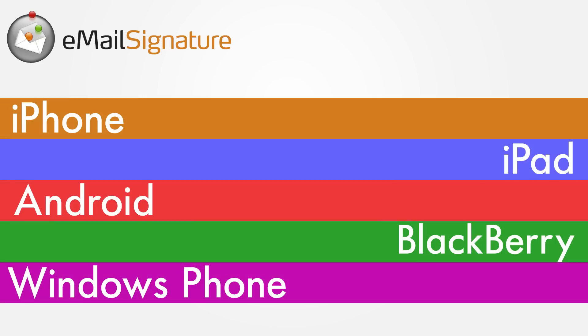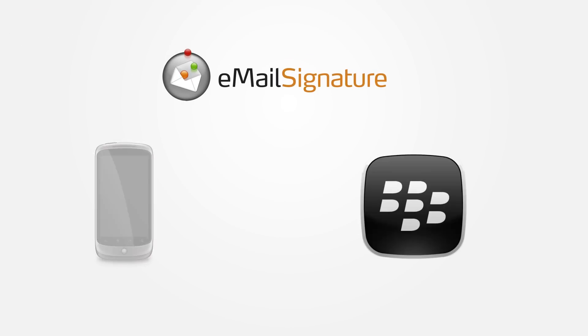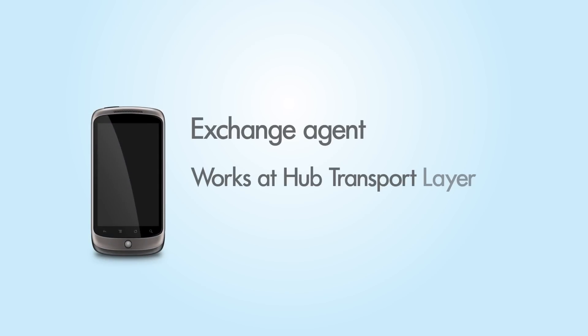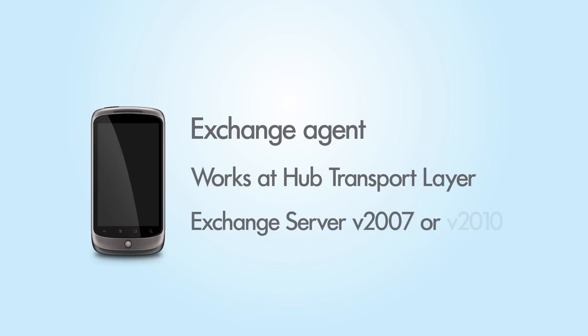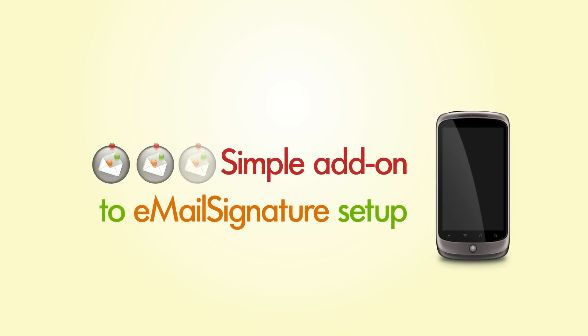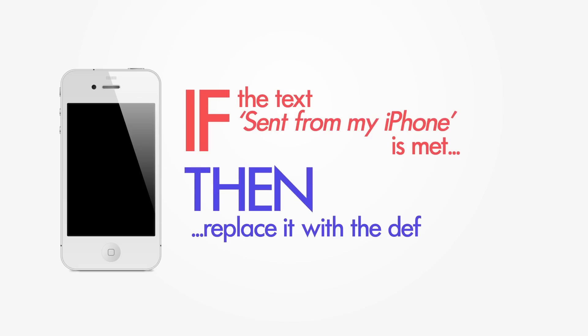For those of you who are more technically oriented, you may ask how we can do this. Email Signature offers two solutions: our multi-device mobile module and our Blackberry module. The mobile module is an Exchange Agent which works at the hub transport layer and is installed under Exchange Server version 2007 or 2010. This works as a simple addition to an existing email signature installation, making it easy to set up. It is rule-based, meaning you can create rules such as if the text "sent from my iPhone" is met, then replace it with the default signature from Outlook.